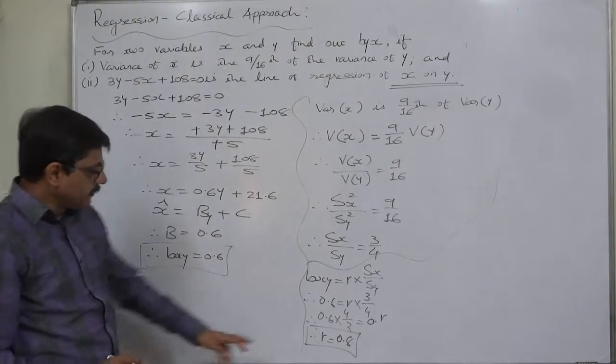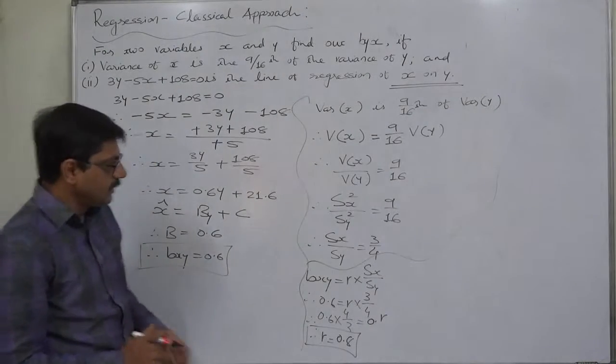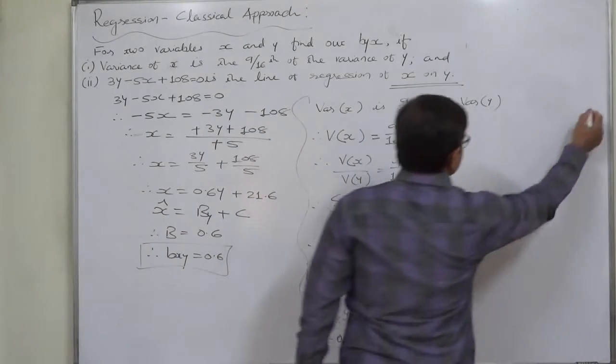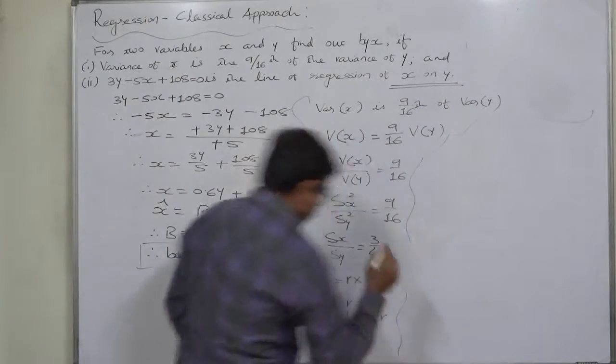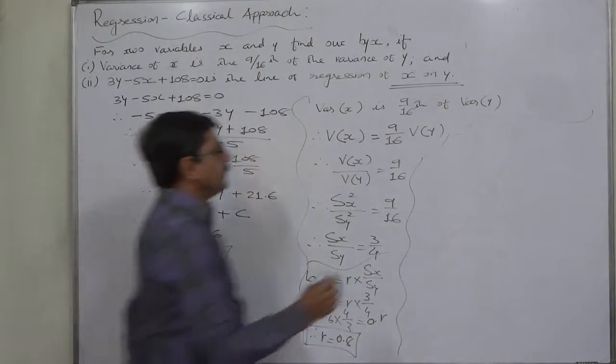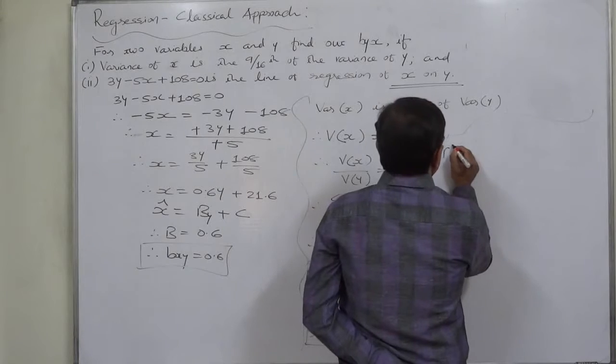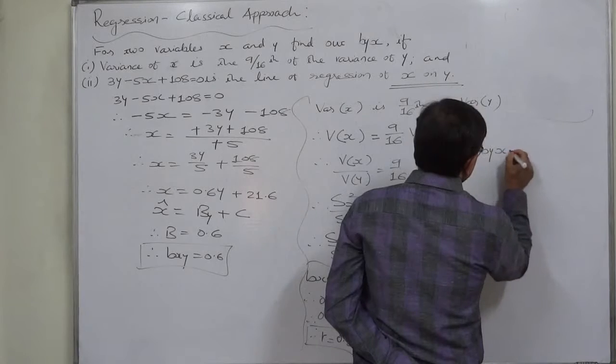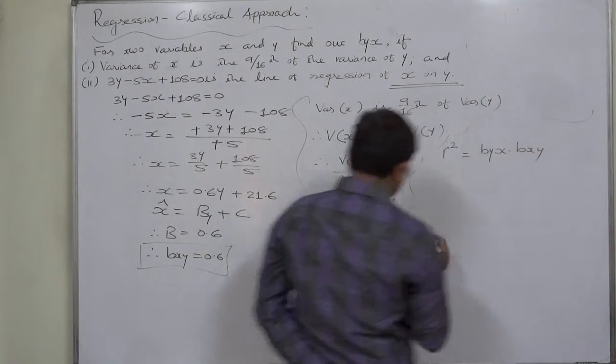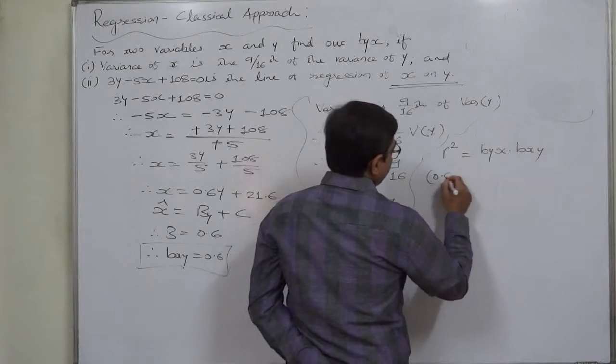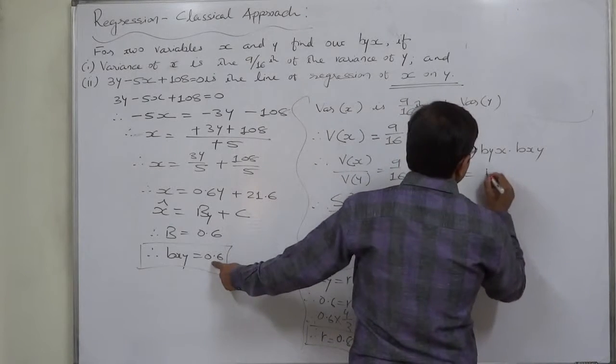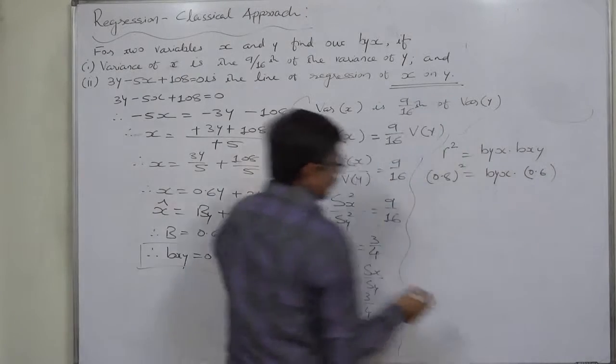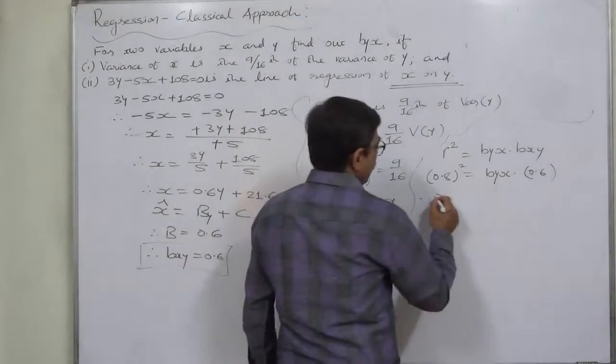But we need to find out b_yx, and we know there is some relationship between coefficient of correlation and coefficient of regression. Let's use that relationship. What is it? The square value of coefficient of correlation is the product of the two coefficients of regression.